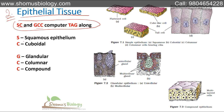In the mnemonic, SC stands for: S for squamous epithelium and C for cuboidal epithelium. Then GCC: G for glandular, C for columnar, and C for compound. So squamous, cuboidal, and columnar are three examples of simple epithelium.